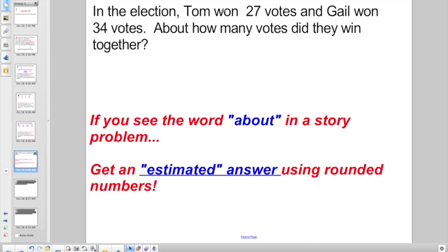It says, in the election, Tom won 27 votes. Gail won 34 votes. About how many votes did they win altogether? Did you catch it? We have the word about, which means estimate. So 27, hey, that looks like it's closest to 30, right? And 34, that looks like that's going to round to 30 as well. So I have 27 with an estimate of 30. I have 34 with an estimated rounded number of 30.